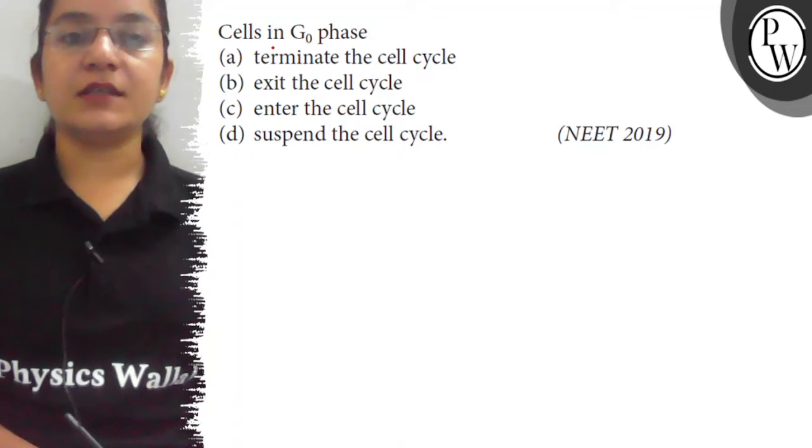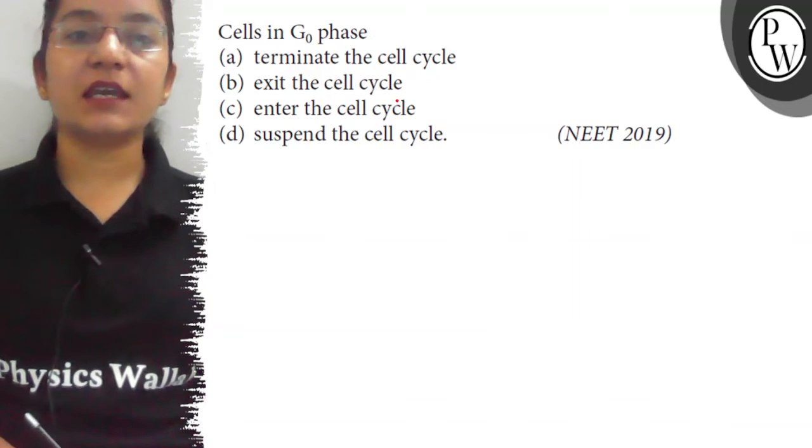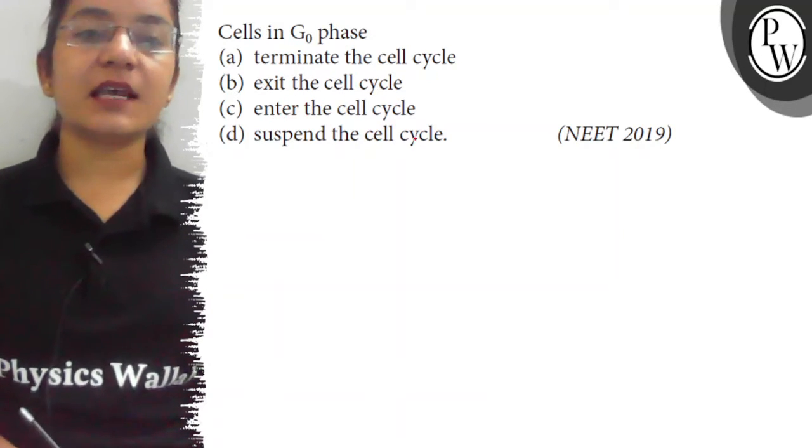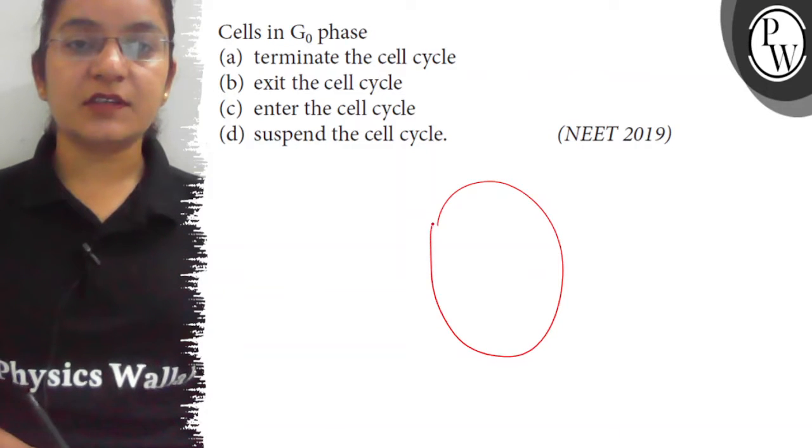Hello students, the question is: cells in G0 phase (a) terminate the cell cycle, (b) exit the cell cycle, (c) enter the cell cycle, (d) suspend the cell cycle. So during the cell cycle, the various events...